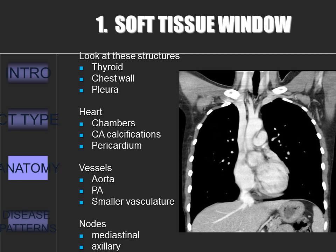The soft tissue windows help evaluate the mediastinal structures, pleural fluid, and calcification. Aerated lung is black, bone and calcium are white, muscle, heart, and large vessels are light gray, and fat is dark gray. It is on this window that you should look for lymph nodes, both axillary and mediastinal. Also, remember to look at the coronal as well as the axial views — it's like a double check verification mechanism. Use whatever images you can.